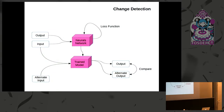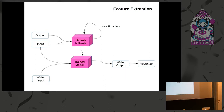Another thing you can do with exactly the same framework is change detection. In this scenario, you train a model and use an alternate input — for example, imagery from one year later, two years later, or one week later. You then compute an alternate output and compare the difference.